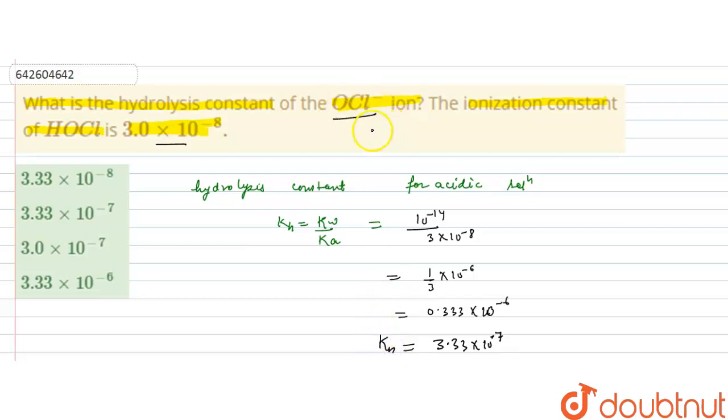So correct answer to this question is option B: 3.33 into 10 raised to the power minus 7. I hope you understood the solution. Thank you.